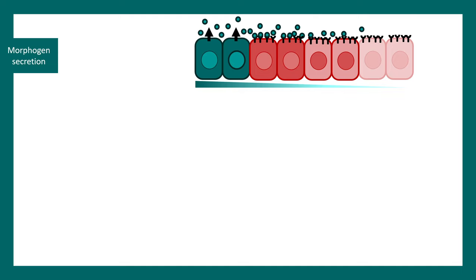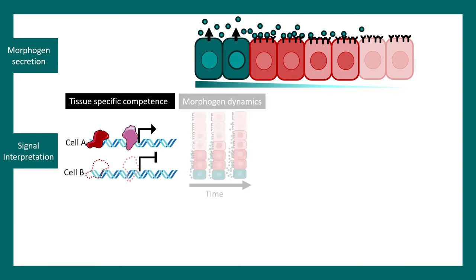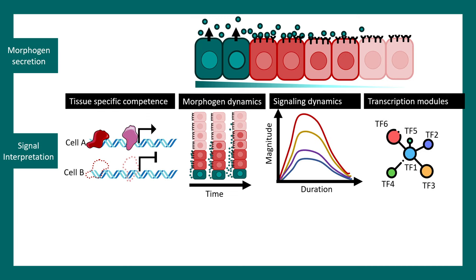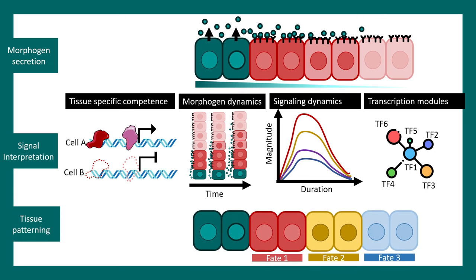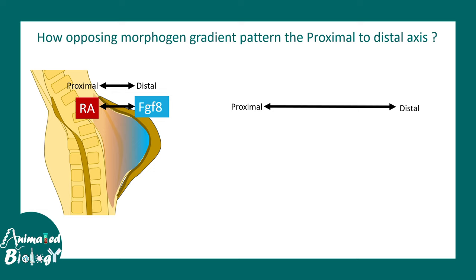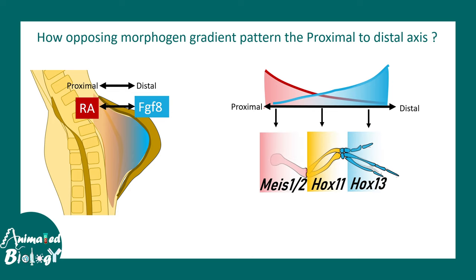Remember how morphogens work: a cell secretes a morphogen, cells near the source get more of it, cells farther away get less, and that sets up interpretation differences. There can be tissue-specific competence, dynamics of morphogen signaling, and transcription factor networks that help the cell interpret morphogen dynamics — ultimately leading to different fate acquisition. Along the proximal-to-distal axis, retinoic acid and FGF8 (fibroblast growth factor 8) act as opposing gradients, and based on concentration thresholds, differential Hox gene expression is established, each responsible for patterning a certain portion of the limb.